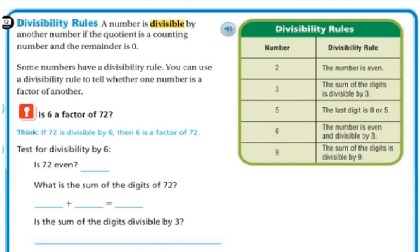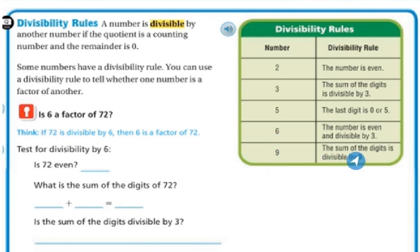For 6, if the number is even and divisible by 3, then 6 will go into it equally. For 9, if the sum of the digits is divisible by 9.